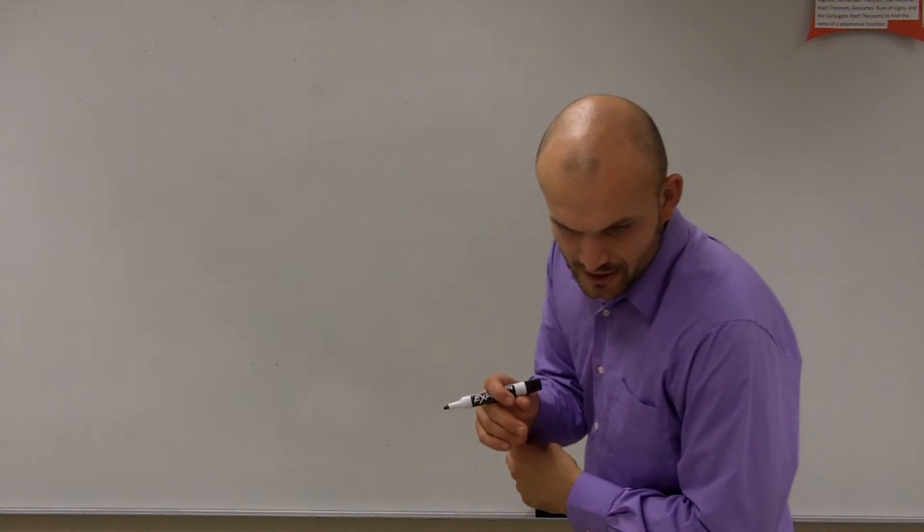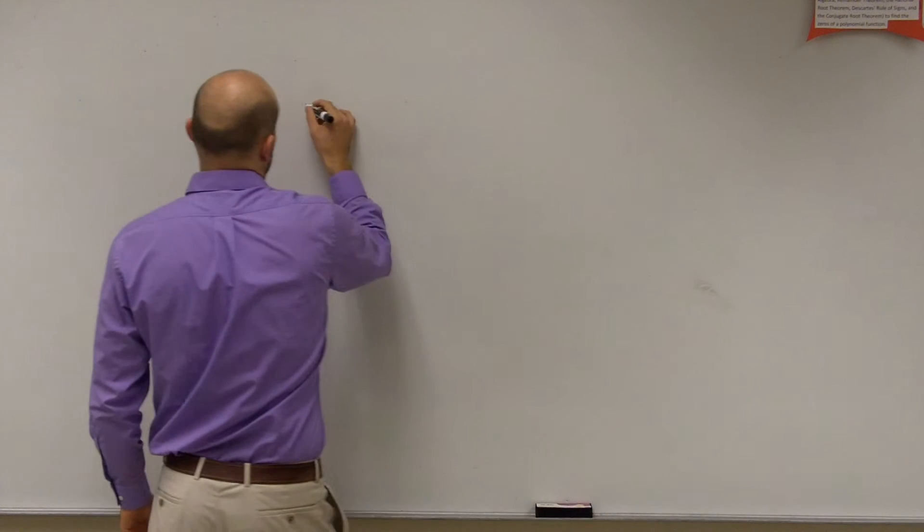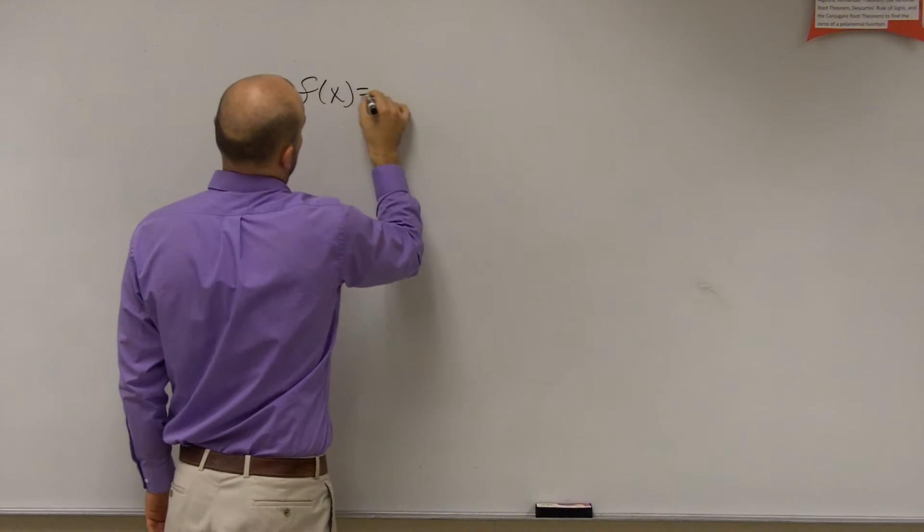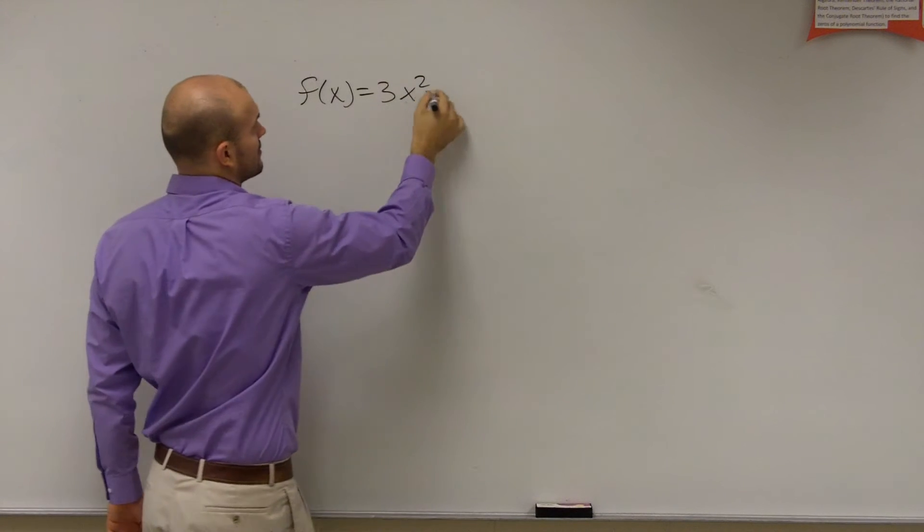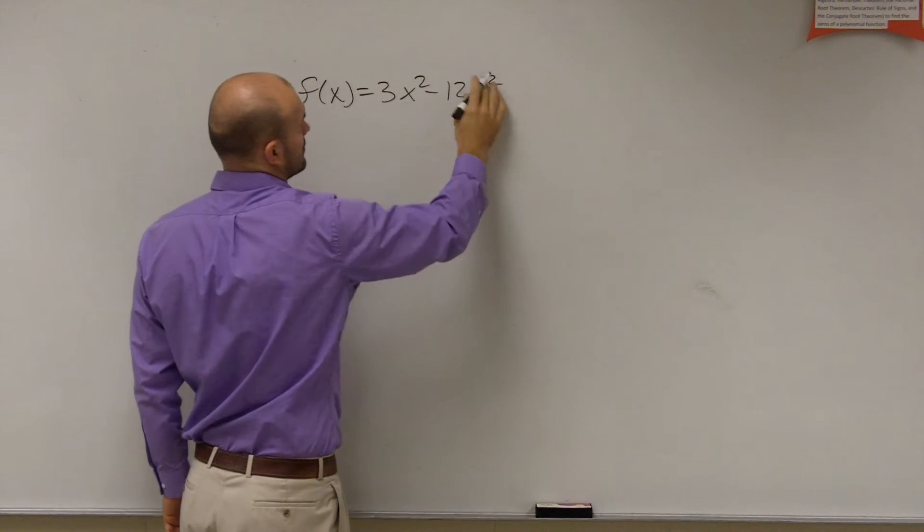I'll do my best to go through this. So 33 states f of x equals 3x squared. What else? Minus 12x squared plus 3x.